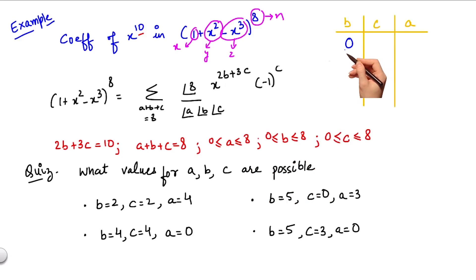Let's start with b equals 0. For b equals 0, c would be equal to 10 by 3, which is a fraction. Therefore, this case is not possible.